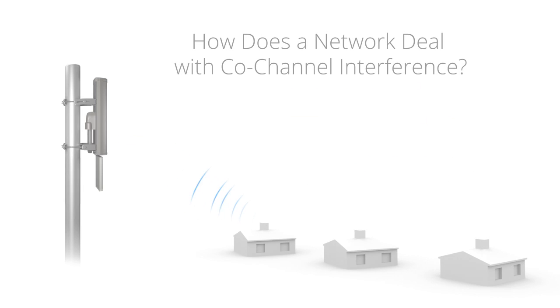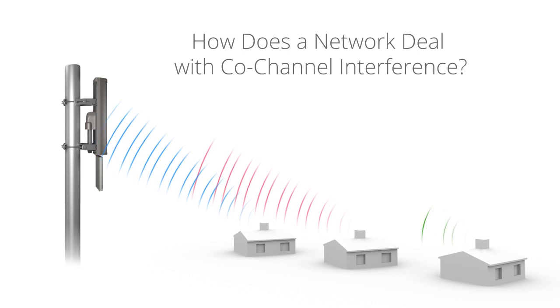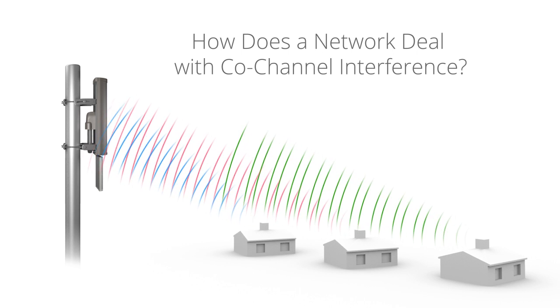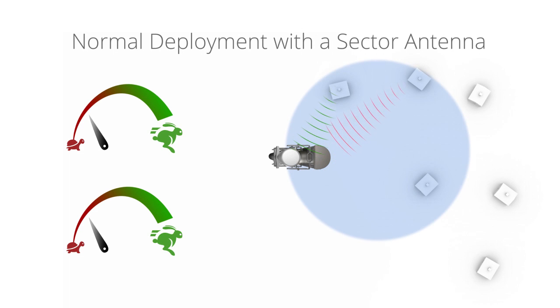Since co-channel interference is on the same frequency as the desired signal, it is difficult to get rid of using signal processing. Most point-to-multipoint deployments use a sector antenna with an access point. Here, the antenna's beam width captures the co-channel interference caused by other transmitters in the same channel.